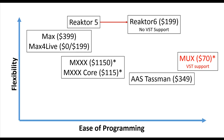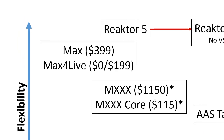Reactor 5 and Reactor 6 are easily at the top of the flexibility scale. Reactor 5 can basically do anything that Max and Max for Live can do, but better, because you have much more fine-grained controls. The components that come out of Reactor are much more complete and easier to use than what comes out of Max for Live. Reactor 6 is also recently out and it's a lot easier to program now with the concept of a block.